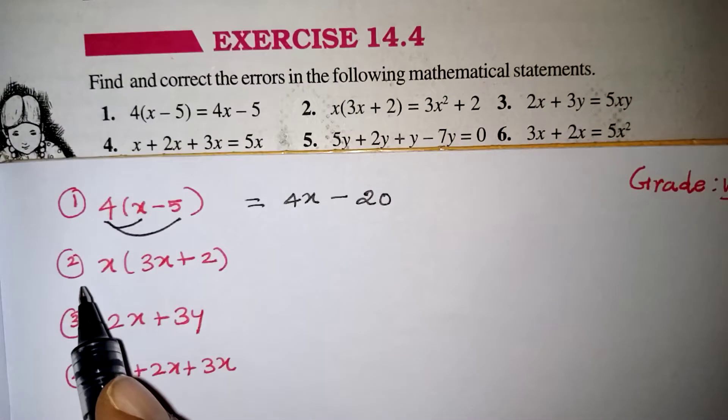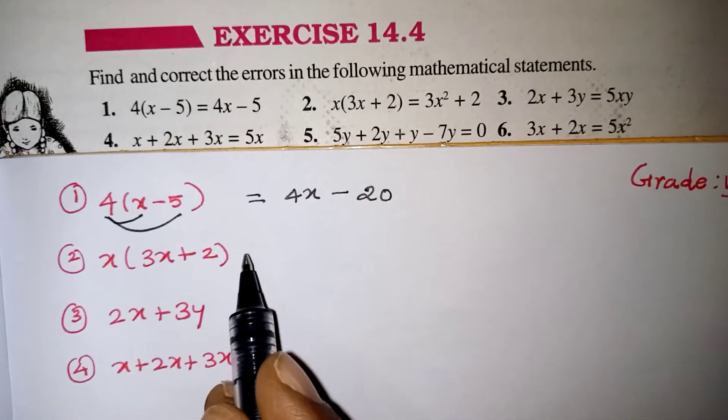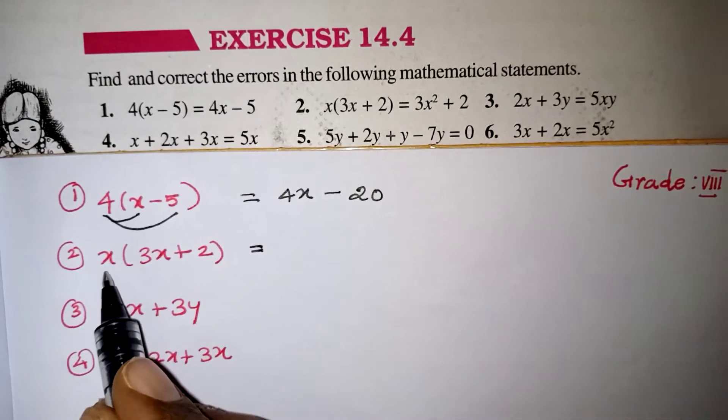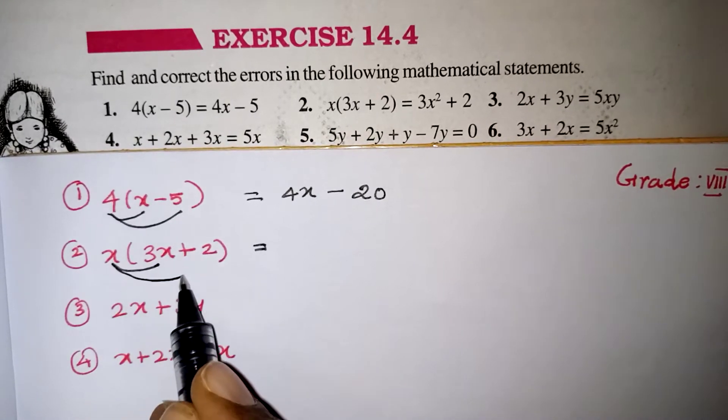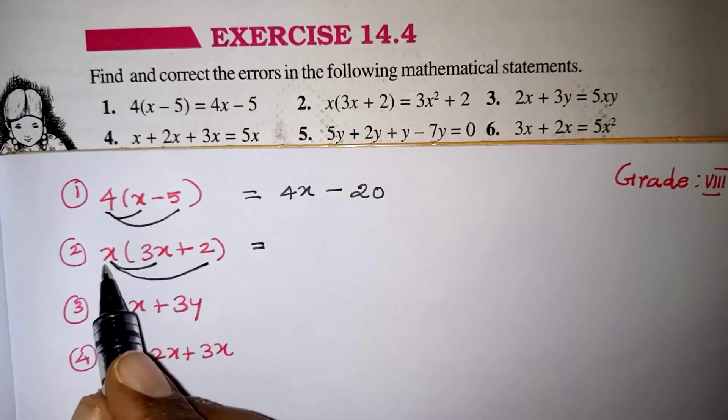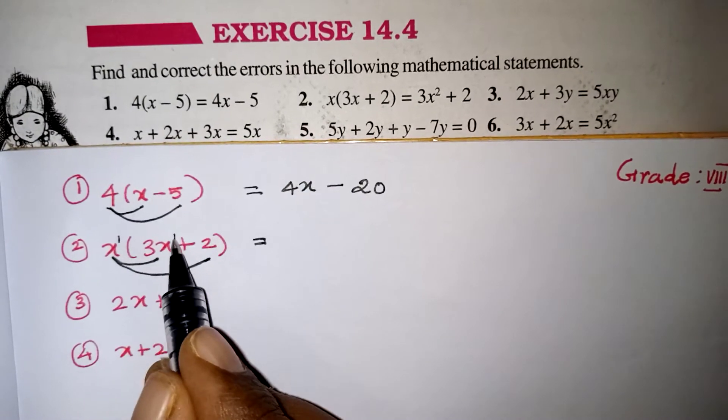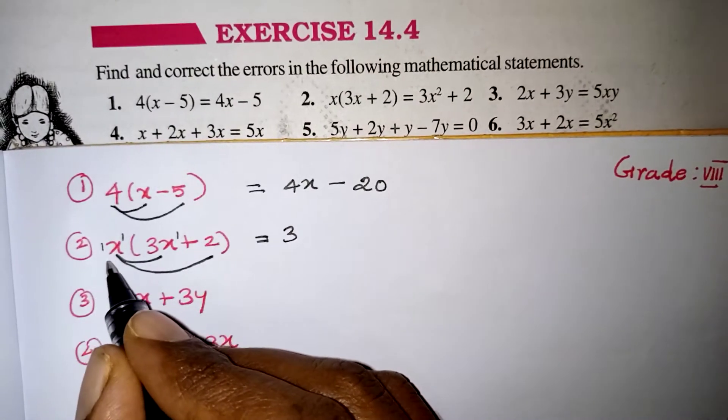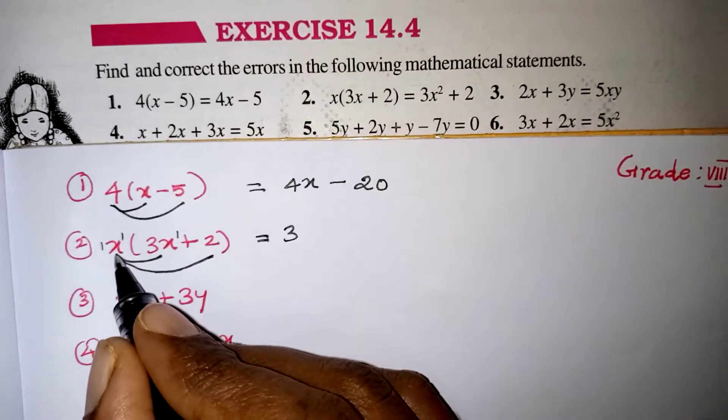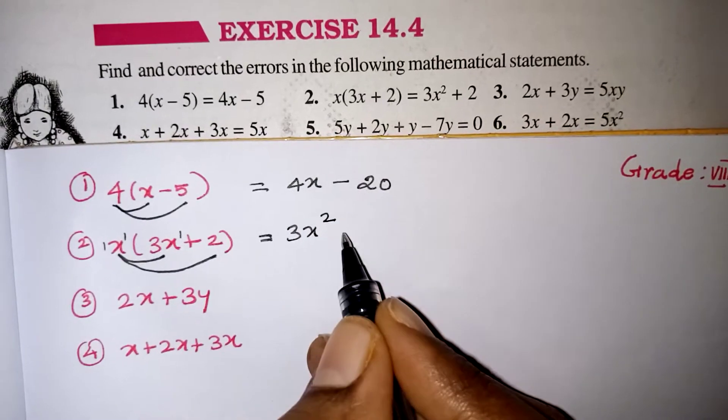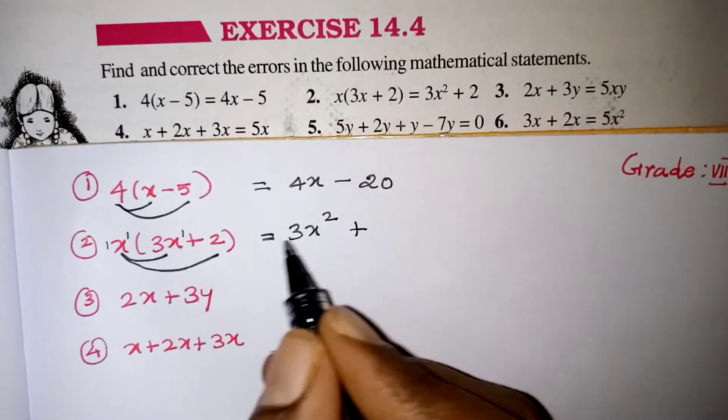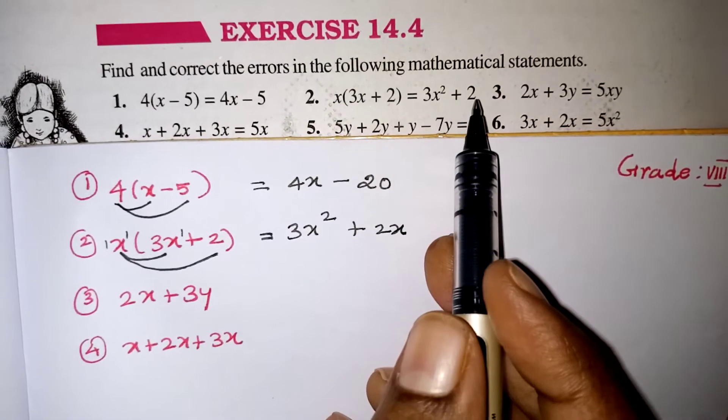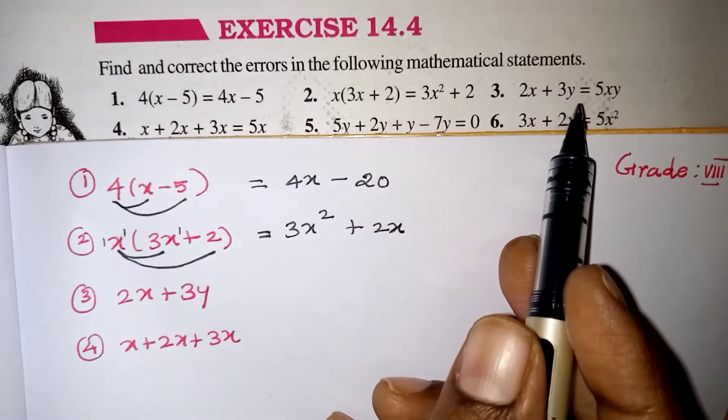Come to the next one. x into 3x plus 2 is our question. Since x is given out of the bracket, this is common for both the terms. So x should be multiplied with this term as well as this term. Now 3x into x or x into 3x. This is x power 1, this is also x power 1. When we are multiplying, actually this is 1x only, so 1 times 3 is 3. x power 1 into x power 1 will give you x power 2. This plus symbol and x into 2 will give you 2x. This is your correct answer. Here this x is missing, this is also wrong only.